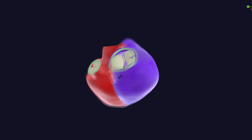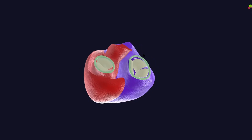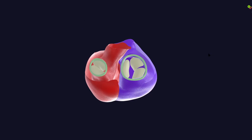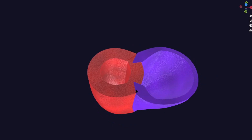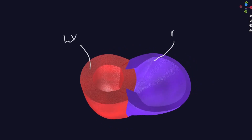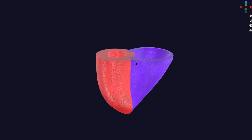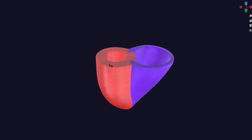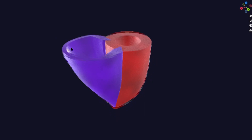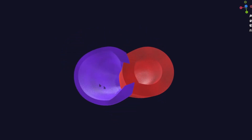To understand why the ventricles have these shapes, we will look at a simplified 3D model of the heart. The left ventricle (red) is shaped more like a tube or bullet, while the right ventricle (blue) is shaped like a triangle. The wide base of the triangular right ventricle leads to a greater diameter and circumference of the right AV orifice.